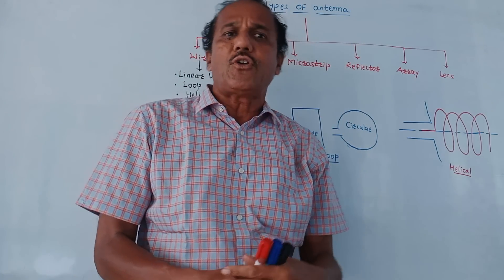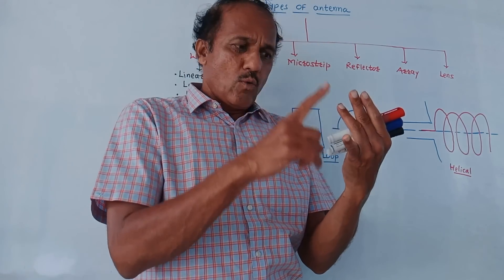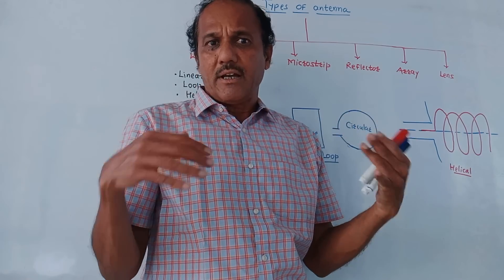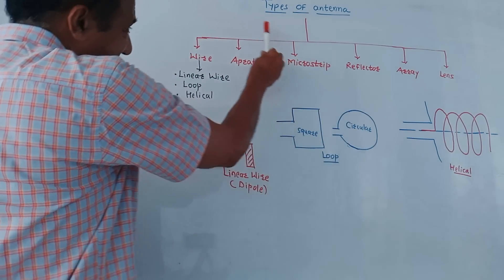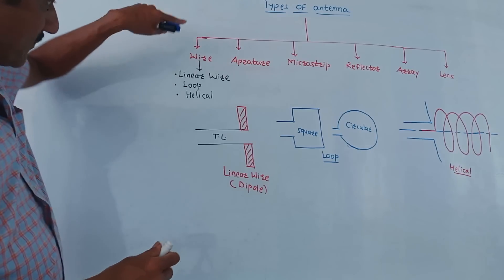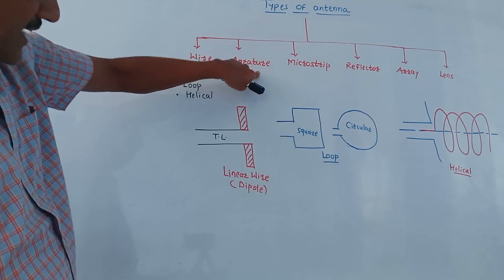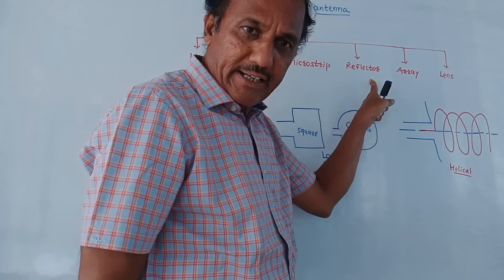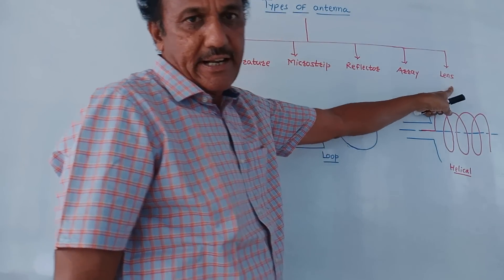From the exam point of view, you may expect a question like: what are the different types of antennas and explain any one or two types. As shown in this chart, the different types are wire antenna, aperture antenna, microstrip antenna, reflector antenna, antenna arrays, and lens antenna.